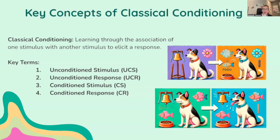Here are the basics. Imagine Pavlov's famous experiment with the dog — I'm sure you've heard about this one. Classical conditioning is all about learning through association. You start off with an unconditioned stimulus, a UCS. This is something that naturally triggers a response. In Pavlov's case, this was the food for the dog. The unconditioned response, the UCR, is the natural reaction to the UCS — for the dog, this was salivating at the sight of food. So far, this is natural and unlearned.